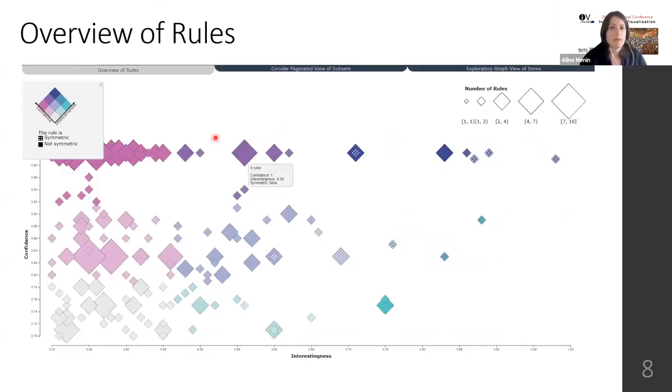The scatter plot display gives the distribution of rules as diamonds over confidence and interestingness measures. We used the size of the diamond to represent the number of rules for each pair of confidence and interestingness values. We used a bivariate color legend shared across the visualization techniques that combines two color palettes to encode the values of confidence and interestingness at the same time, such that dark blue diamonds indicate rules with high confidence and high interestingness, while colors tending to pink represent higher confidence than interestingness, and colors tending to green represent higher interestingness.